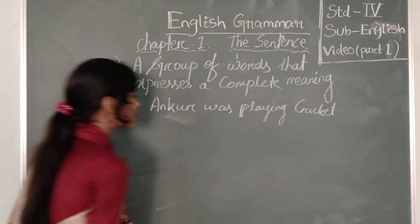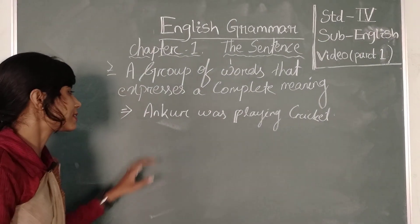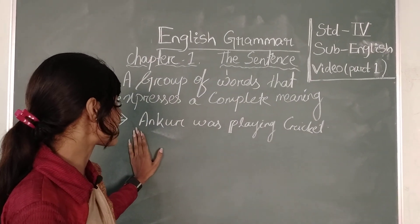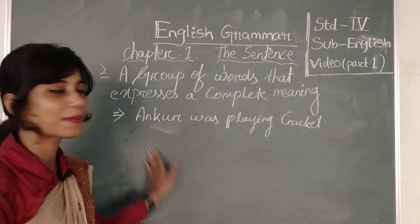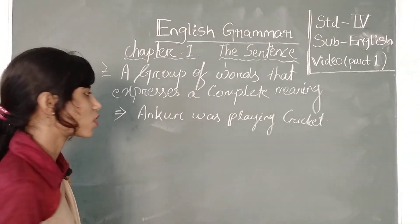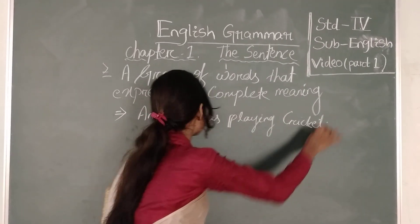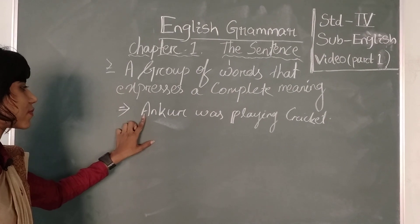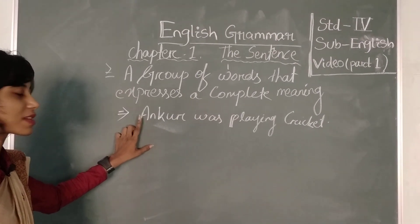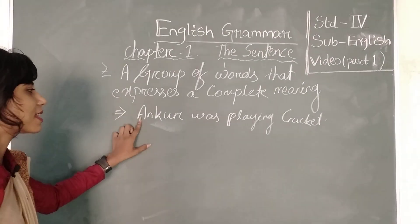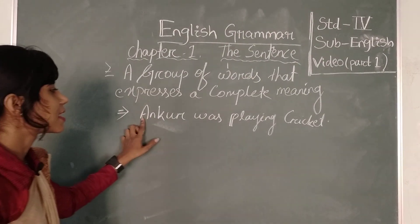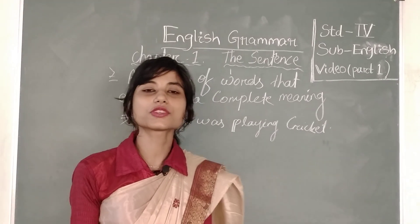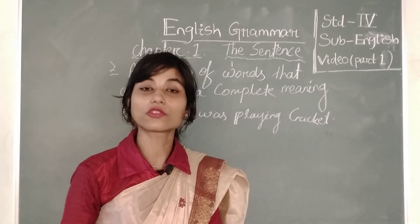You can see on the blackboard I have already written a sentence: 'Uncle was playing cricket.' In a sentence, the first letter must be capital, and at the end of the sentence we must put some signs. So what are these signs?